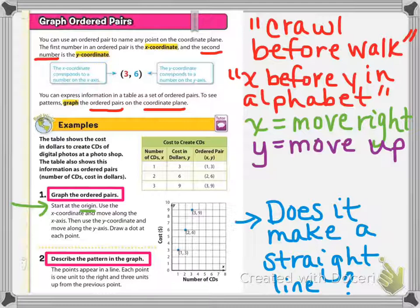So graphing ordered pairs, again you have a reminder here. X coordinate and y coordinate. If you look at the examples, example one, you're looking at the table for the number of CDs which they have called x, the cost in dollars which they call y, and then the third column they're putting it together as an ordered pair, x and y coordinates. When you are graphing the ordered pairs, you have to start at the origin which remember is at point zero zero. You are going to move right for the x, move up for the y, and then you can see the dot that they've drawn for one and three, two and six, and three and nine.